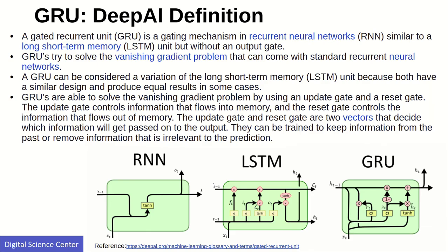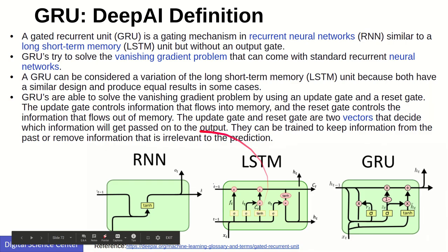GRU is another variation of recurrent neural networks. The basic difference from LSTM is that GRU doesn't have an output gate. In some cases, GRU produces the same output as LSTM due to the similarity in the network — the key difference is that it has output without a gate.